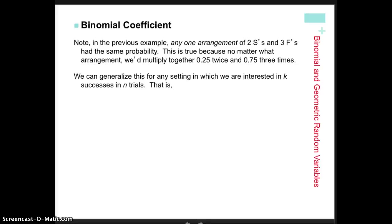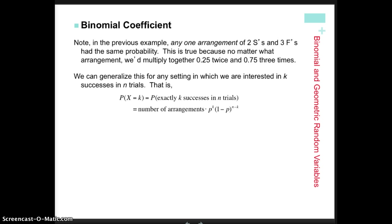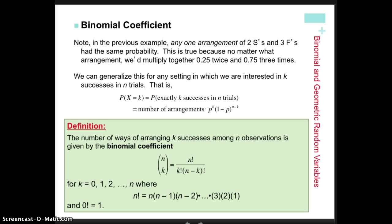Think of this as a giant tree diagram. In the blood type case, we have five branching points. We need to know how many different ways the successes and failures can occur. For that, we use the binomial coefficient, which you may remember as n choose k: equal to n factorial divided by k factorial times (n minus k) factorial.